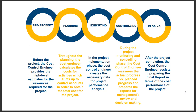In the planning stage, once the project is undertaken by the organization, the cost-control engineer calculates the cost for activities, which sum up to control accounts, in order to obtain the total cost for the project.